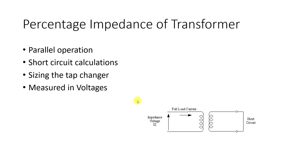Another important aspect of percentage impedance is its relationship to fault current. For short-circuit calculations, if the transformer secondary terminals are dead short-circuited, the fault current depends on the impedance of the transformer — that is, the percentage impedance. The percentage impedance functions to limit the fault current. We can use it to calculate fault MVA, and from the fault MVA we can calculate the fault current or short-circuit current.